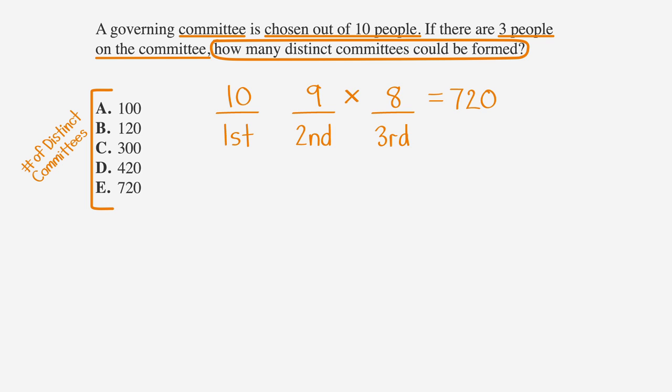Okay, so here's the tricky part. 720 represents the total number of combinations, but the problem asks for the number of distinct committees that can be formed. So we need to get rid of competing groups. To do that, we simply divide the total number of combinations by the number of choices factorial.